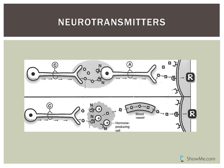The pre-ganglionic fibers are cholinergic - if something is referred to as cholinergic, it releases acetylcholine (ACh). The receptors on the cell bodies of the post-ganglionic neurons are labeled N - those are nicotinic receptors.